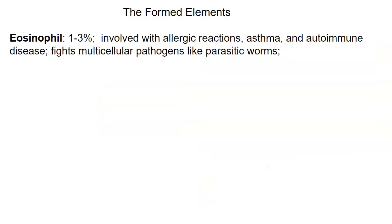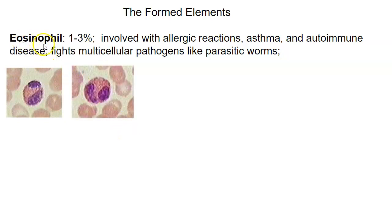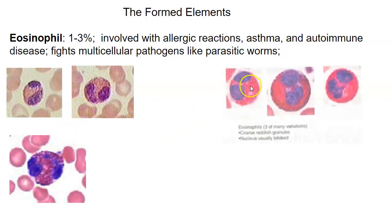Eosinophils are like mast cells in that they're involved with allergy and asthma, and they fight multicellular pathogens like parasitic worms. A high neutrophil count suggests bacterial infection, while a high eosinophil count may indicate a larger parasite like a worm. 'Eosin' is a stain that stains red, so the cytoplasm of eosinophils is often stained red — one distinction from neutrophils.